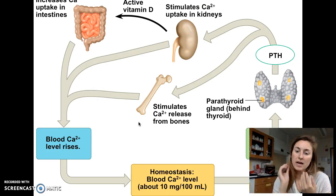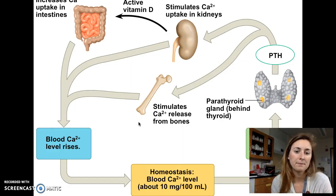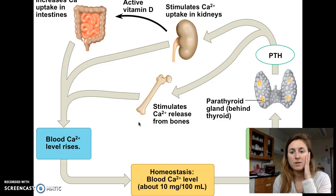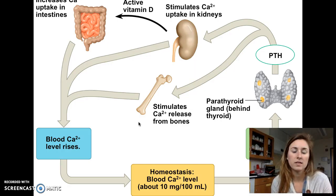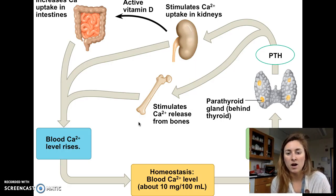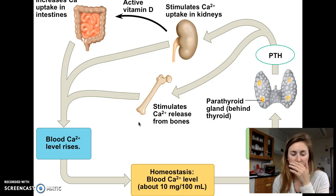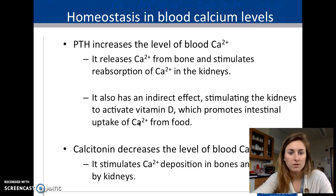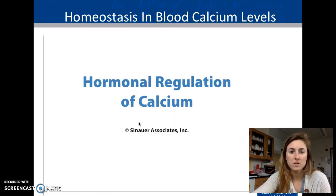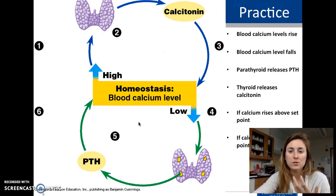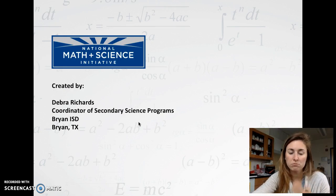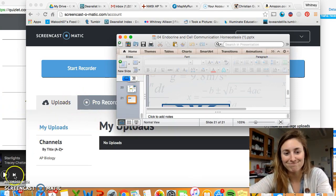Calcium homeostasis in the blood and bones works similarly. Parathyroid hormone acts on the kidney, bone, and intestines depending on calcium levels, determining whether more hormone is released. Calcitonin is another hormone involved in calcium regulation. That concludes the endocrine system review.